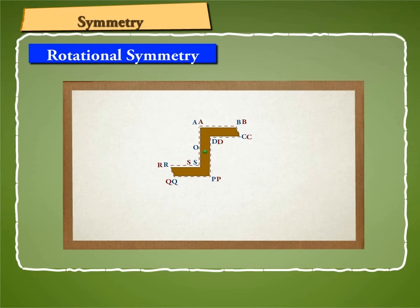Now rotate the cardboard figure through 180 degrees. You will notice that the cardboard figure exactly fits the figure on the white paper. The points A, B, C and D of the cardboard figure fall on the points P, Q, R and S shown in color of the white paper figure.